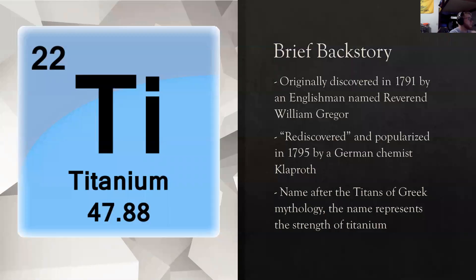So a brief history of titanium. Titanium, atomic number 22, was originally discovered in 1791 by an Englishman named Reverend William Greger. However, this discovery of titanium went largely undiscovered by the scientific community, and it wasn't until 1795 that it was rediscovered by a German chemist who became mainstream in the scientific community.